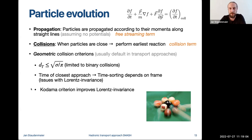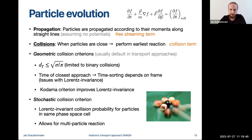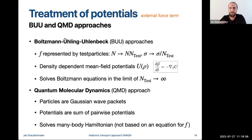An alternative class of collision criteria are stochastic ones, where a collision probability is assigned to particles in the same phase-space cell. This probability is Lorentz invariant, which resolves the frame-dependence issue, and allows treatment of multi-particle interactions. However, there is some dependence on the choice of phase-space cell size. The external force or potential term requires a separate treatment depending on the transport approach chosen.